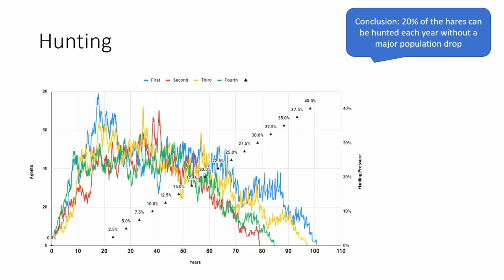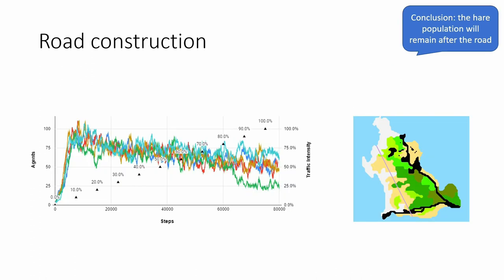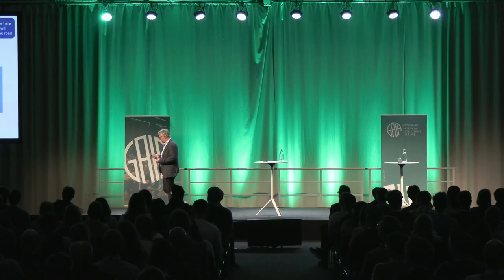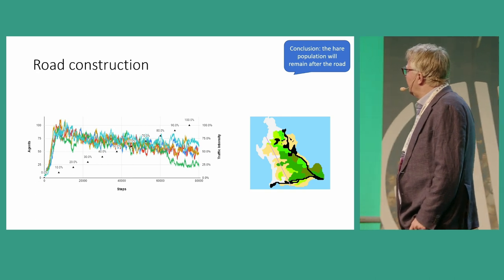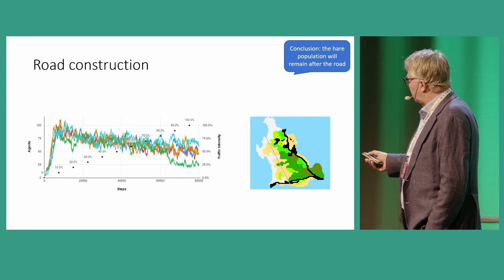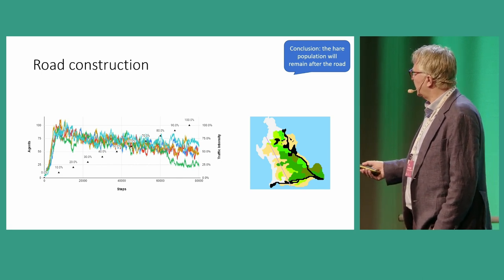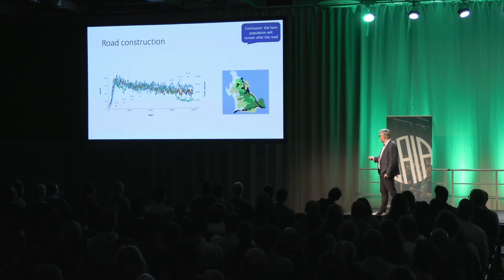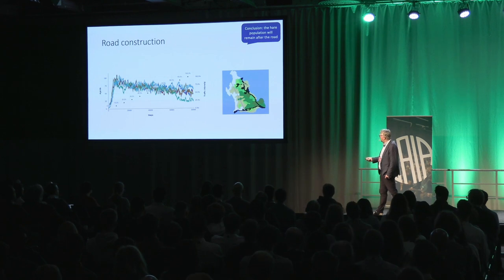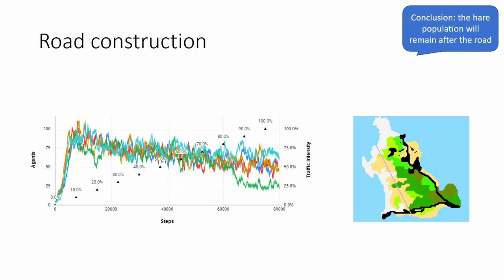That could be good information for those deciding on policies for how much hunting should be allowed. Another use case is building a road. If you know what Amundön looks like, it's a crazy idea since the road leads into the ocean, but for the sake of argument we see what happens. The number of road kills depends on traffic intensity. Without the road we have about 100 hares; if we build the road, the population goes down depending on traffic intensity. In one simulation we ended up with much fewer hares because the population on the west side of the road went extinct.